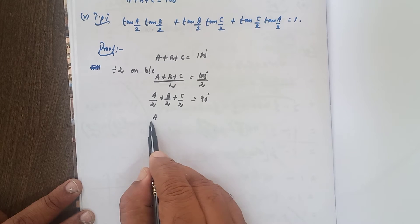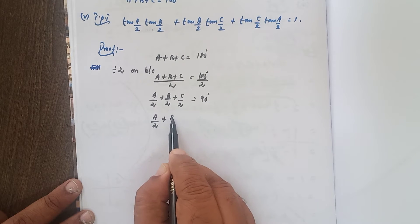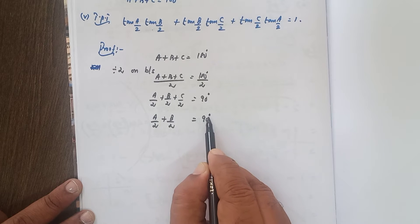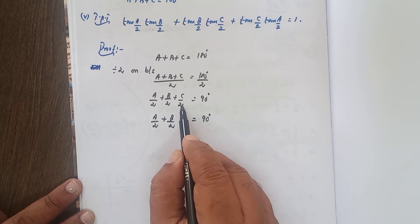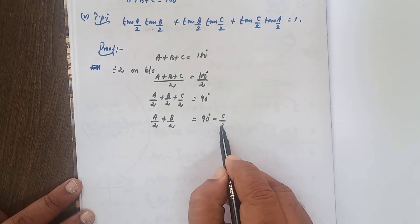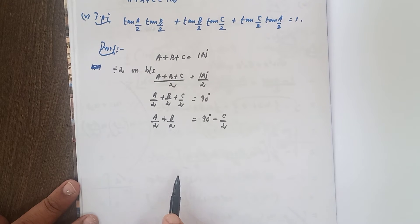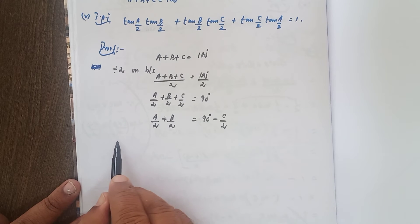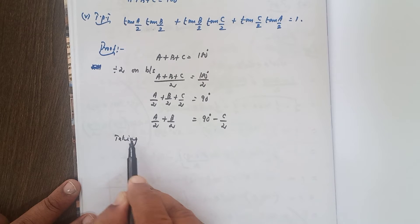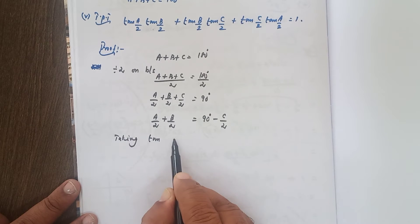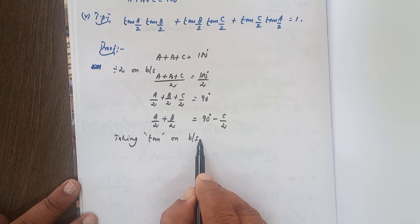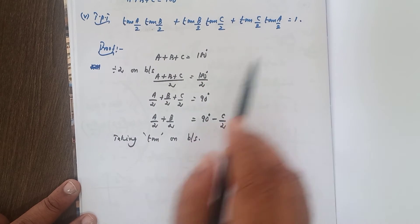Retaining A/2 plus B/2 on the left hand side, take C/2 to the right hand side — it becomes minus C/2. Now, taking tan on both sides to get the required result.